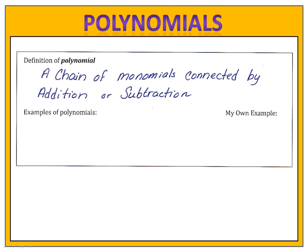A polynomial is a chain of monomials that are connected by addition or by subtraction. An example of a polynomial is 3x plus 2. Notice here we have two monomials that are connected by addition. Or 3x squared y to the fifth plus 2xy minus 7. Here we have three monomials connected by addition or subtraction. These are called polynomials.